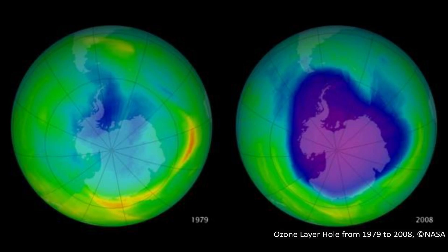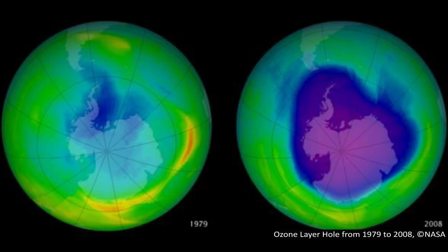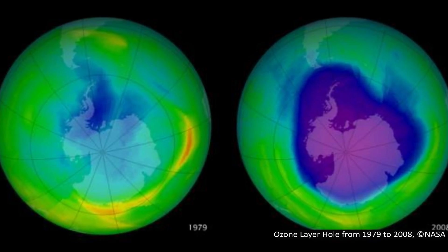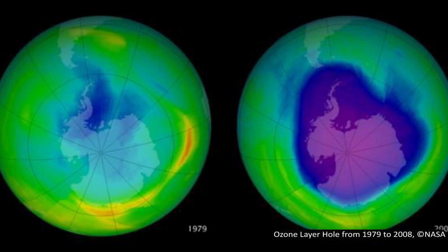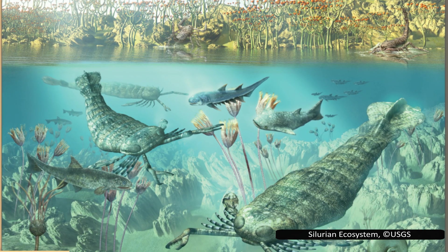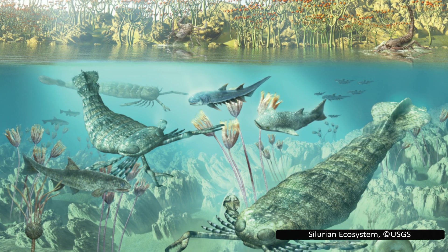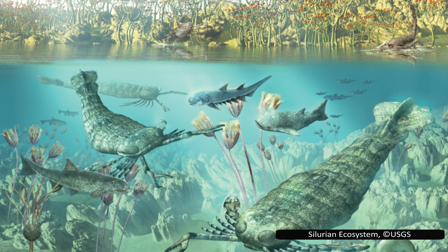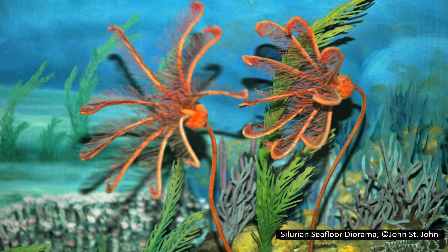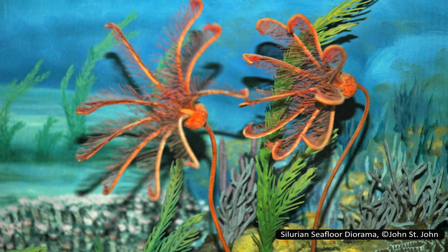Compared to the tumultuous Cambrian and Ordovician periods, the Silurian was relatively stable. During this period, the ozone layer formed in the atmosphere, protecting Earth from the sun's ultraviolet radiation — a pivotal development that made life on land far more viable. Complex terrestrial plants began to appear, along with terrestrial arthropods like centipedes, arachnids, and insects. Coral reefs emerged in the oceans, and vertebrates continued to evolve. The jawless fishes that first appeared in the Ordovician diversified, and the first jawed fishes made their debut. The climate was warm, and there were no major extinction events — but not so fast.